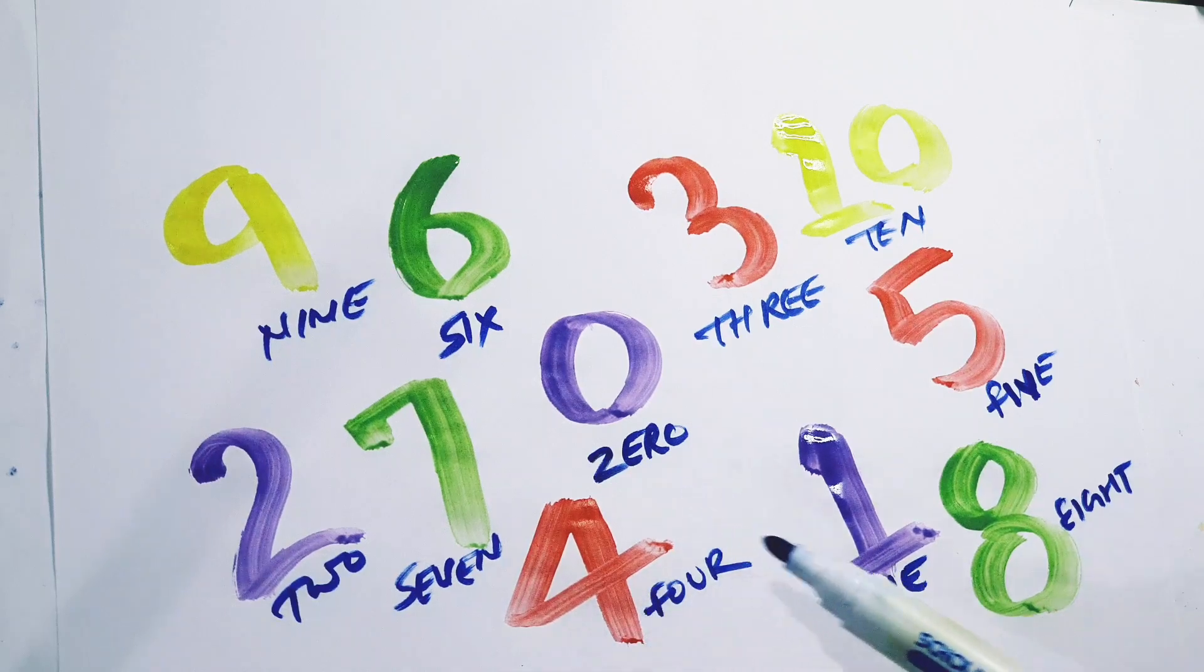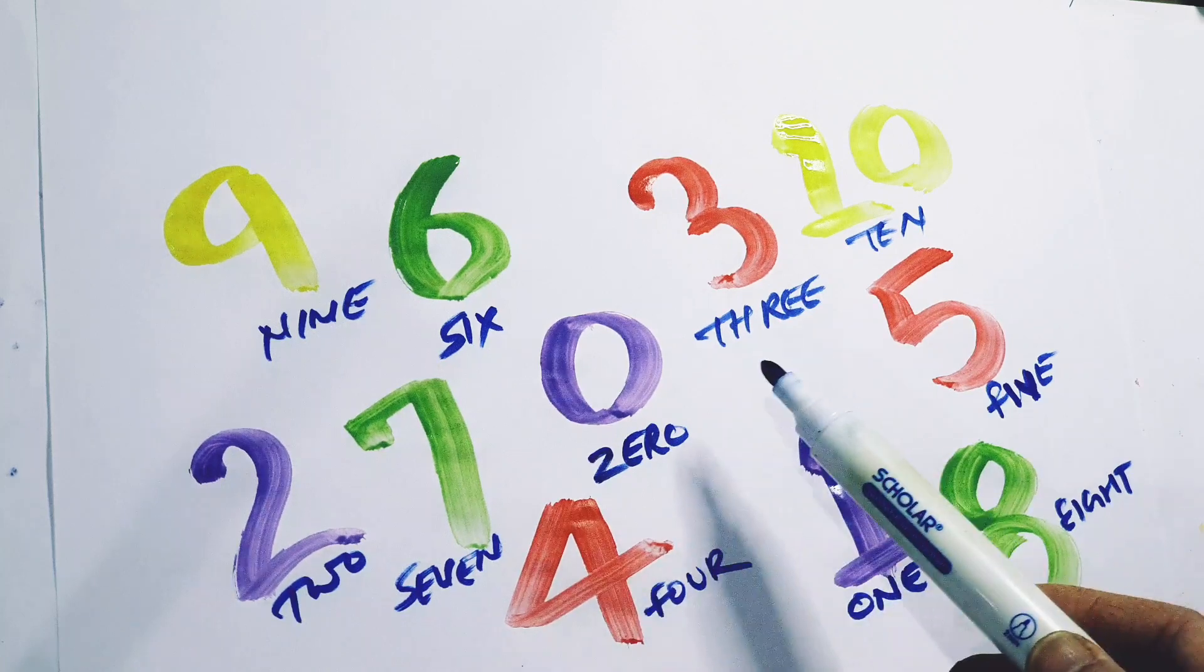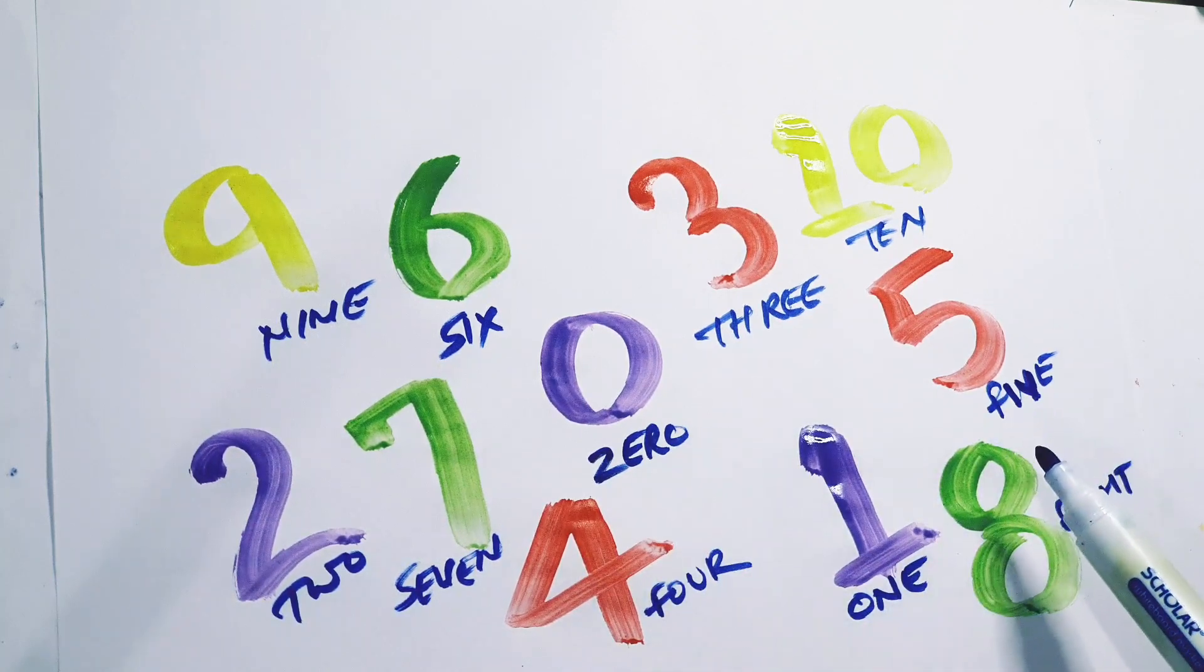0, Z-E-R-O, zero. 1, O-N-E, one. 2, T-W-O, two. 3, T-H-R-E-E, three. 4, F-O-U-R, four. 5, F-I-V-E, five.